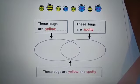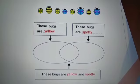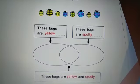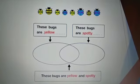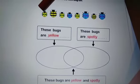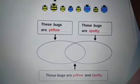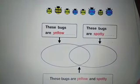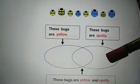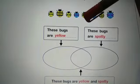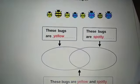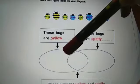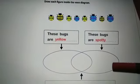Here is one more example about Venn diagrams. The first circle is for bugs that are yellow, the second circle is for bugs that are spotty, and the overlap is for both yellow and spotty. The first bug is yellow and spotty, so it goes in the overlap. The second bug is only yellow, so it goes in circle A. The third bug is also yellow and spotty, so it goes in the overlap. The fourth bug is only spotty, so it goes in circle B. The fifth bug is yellow and spotty, the sixth is spotty only, the seventh is yellow only, and the last is spotty only.